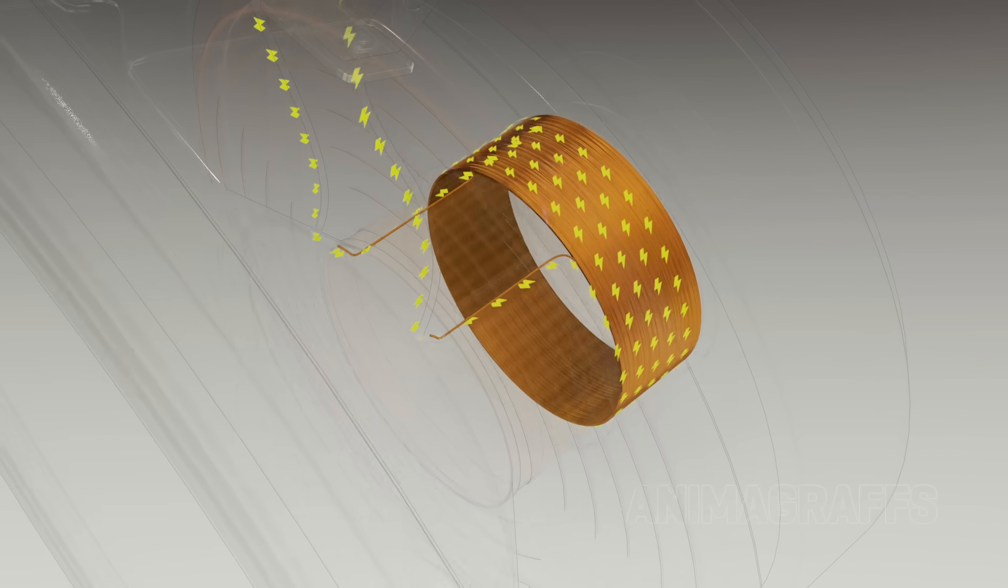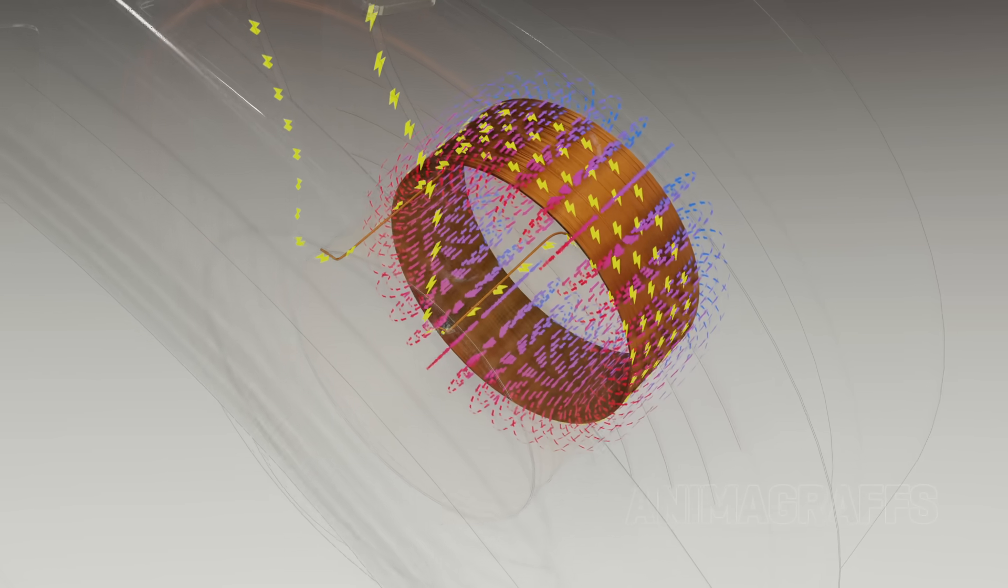When electricity flows through the copper windings, it naturally generates a surrounding magnetic field.